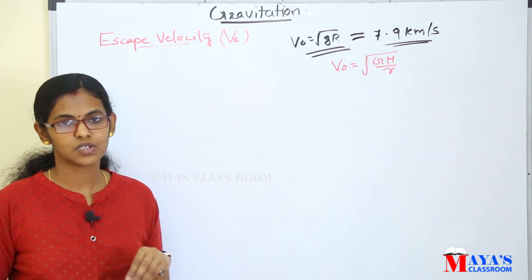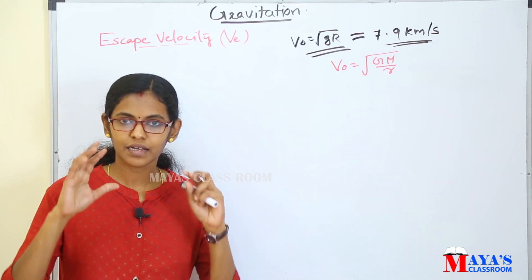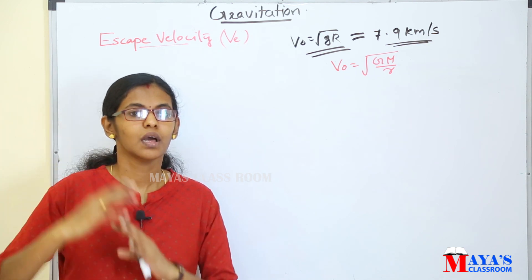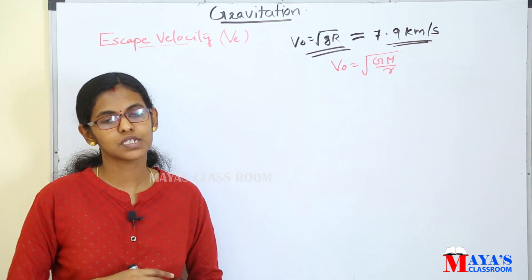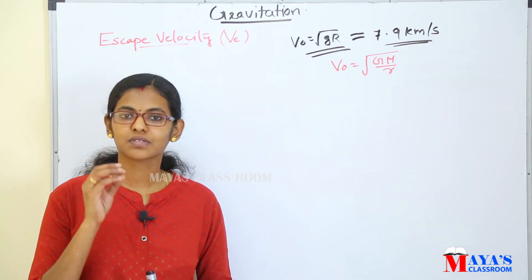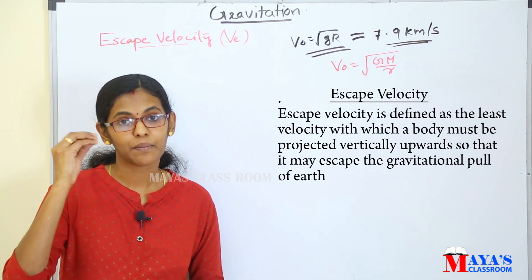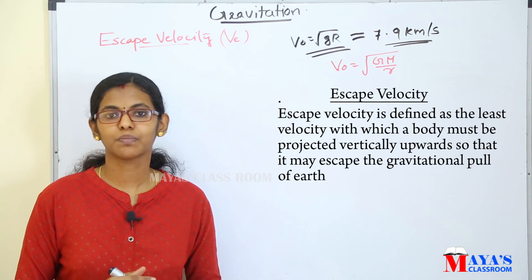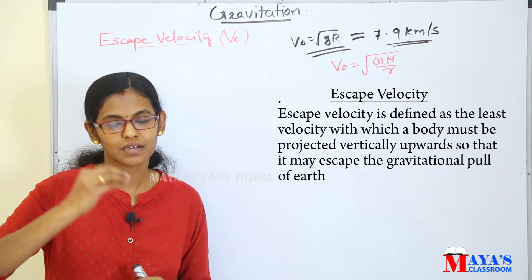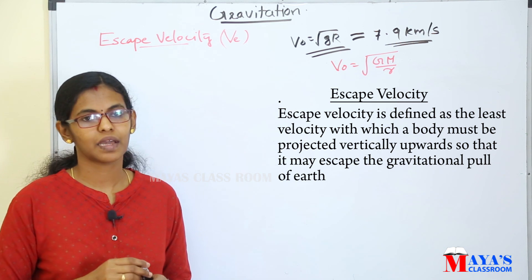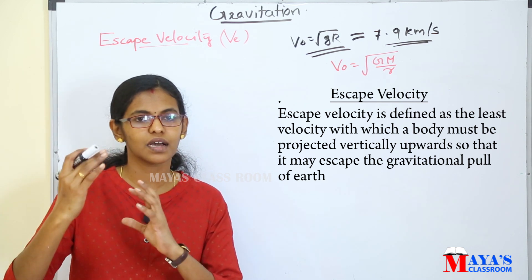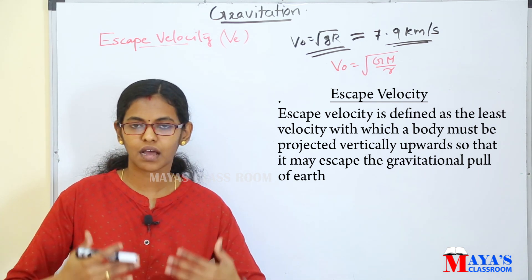Escape velocity is represented as Ve. It is the minimum velocity of a body projected against the earth's gravitational field. That is the least velocity with which a body must be projected vertically upwards so that it will escape from the gravitational pull of the earth.